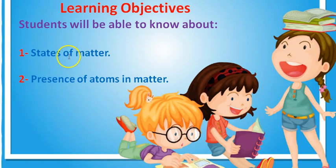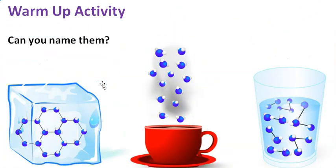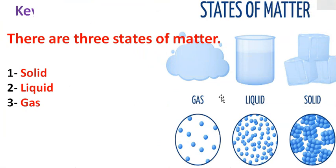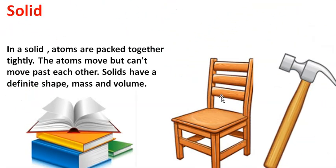Start for the activity. Can you name them? One, two, three. Yes, this is an ice cube, and the ice cube is solid. This smoke is gas, and the water in the glass is liquid. These all are the states of matter. My dear students, the three states of matter are solid, liquid, and gas.